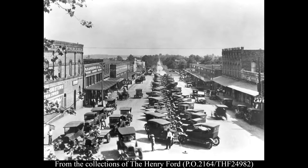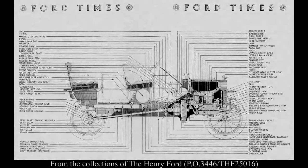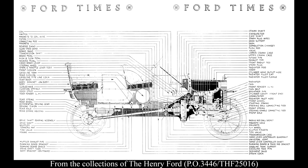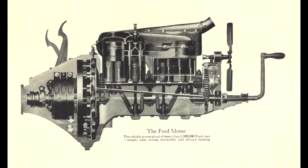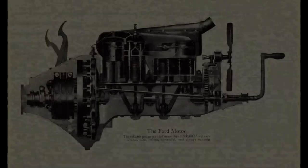The Model T was intended to be as simple as possible, so that it would be inexpensive to produce and fairly easy to maintain or repair. The Model T took some ideas from existing cars, as well as many new ideas, and blended them together in one car. The Model T broke new ground by combining the engine, transmission, and universal joint in one cast iron case.